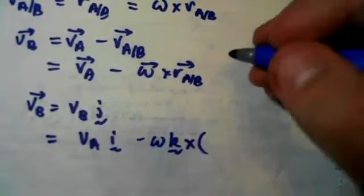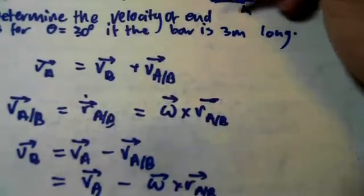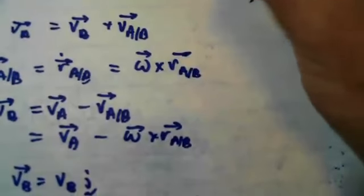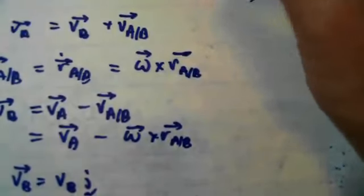That should be negative L cosine theta because this is our L cosine theta. And this is our sine theta. So L sine theta is this term, it's positive. L cosine theta is negative.